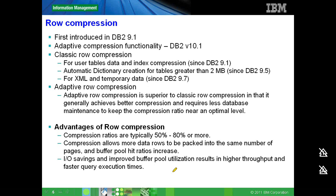In DB2 10, we introduced a new compression algorithm called adaptive compression. Adaptive row compression is much superior to classic row compression. Where you might get around 80 percent compression with classic, with adaptive you will get much more — it compresses not only at the table level but also at the page level. We get a typical compression ratio of 50 to 80 percent. Compression improves I/O savings, buffer pool utilization, throughput, and query execution time.